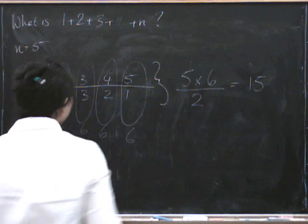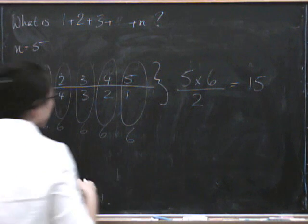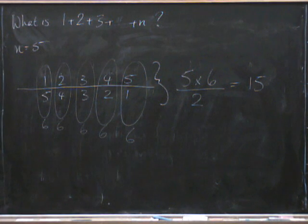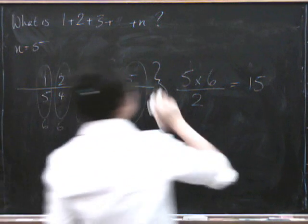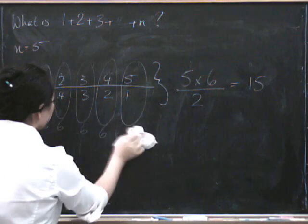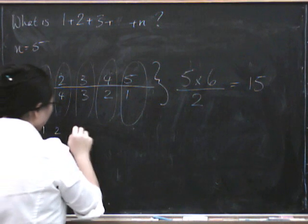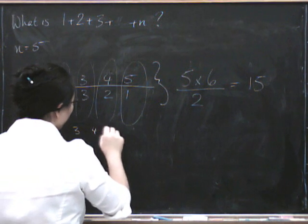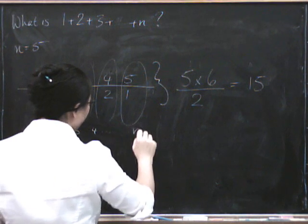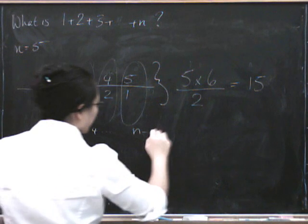So in the general case, we could have done this all the way up to n. So let's extend this picture up to n. I'll put it down here. So if we did 1, 2, 3, 4, all the way up to n, then when we went backwards, we'd go...